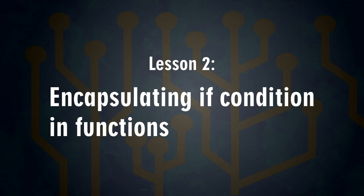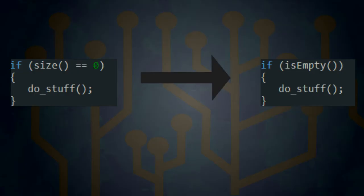Number two: Encapsulating if conditions in functions. It's much more readable to replace your series of ORs and ANDs with a named function. For example, 'isEmpty' instead of 'size equals 0.' It is a simple idea, yet it never occurred to me that extracting such a function with a name would simplify a lot of code. I have to admit I usually just put comments around it.